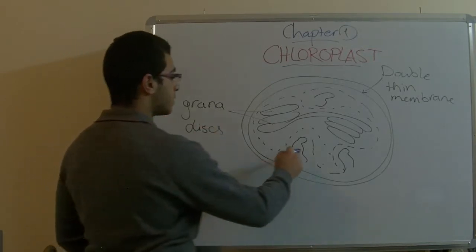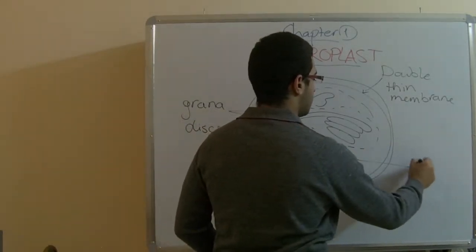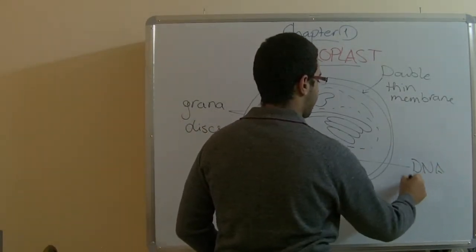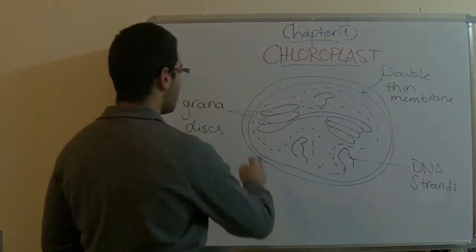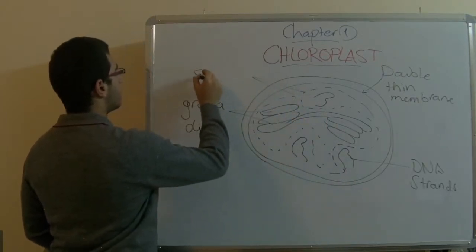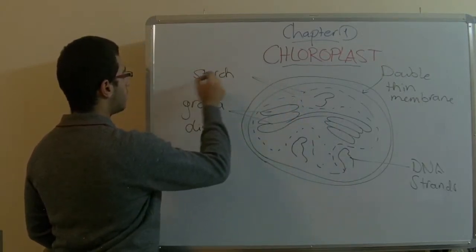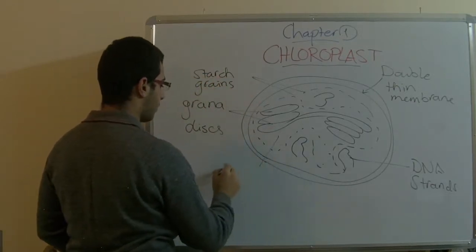The grana discs, this is DNA strands, and those are starch grains, and this is the stroma.